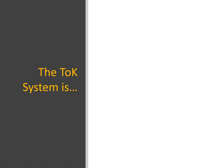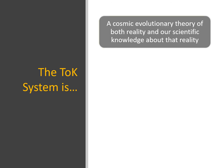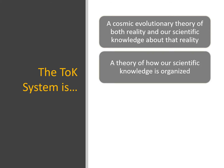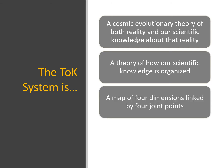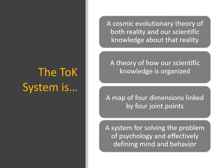This video will briefly share the main features of the system. These include the fact that the Tree of Knowledge System is a cosmic evolutionary theory of both reality and our scientific knowledge about that reality, a theory about how our scientific knowledge is organized, a map of four dimensions linked by four joint points, and a system for solving the problem of psychology and effectively defining mind and behavior.